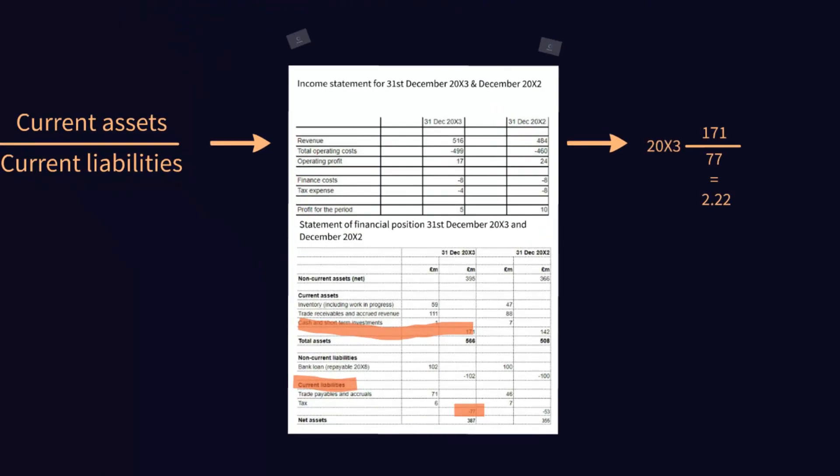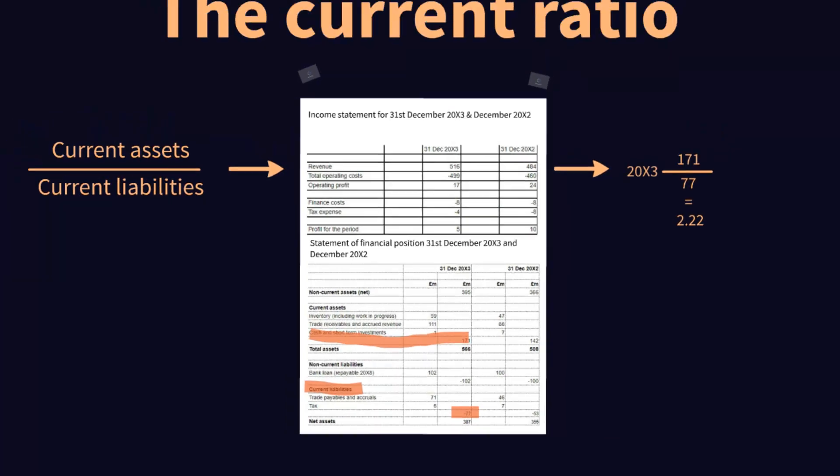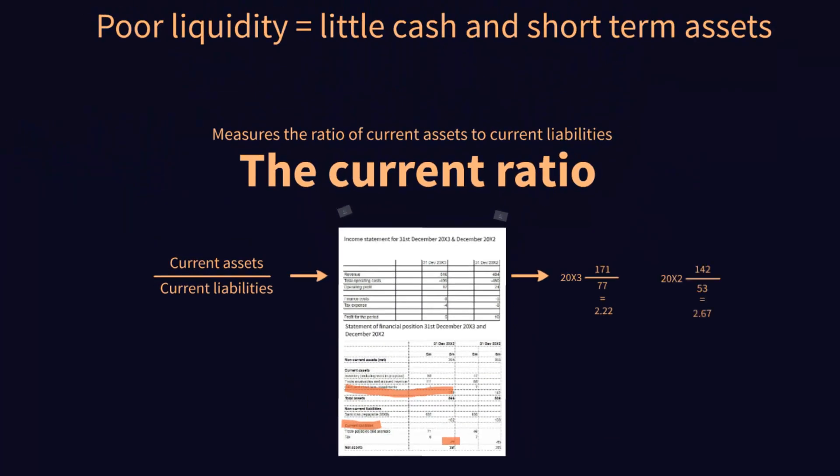However, when we look at last year — the previous year, 200X2 — we had current assets of £142 million but we only had current liabilities of £53 million, meaning that last year we actually had a current ratio of 2.67. That means it's gotten worse. We have more liabilities compared with assets than we had last year. Last year we could pay off our current liabilities 2.67 times over; now it's just 2.22 times.